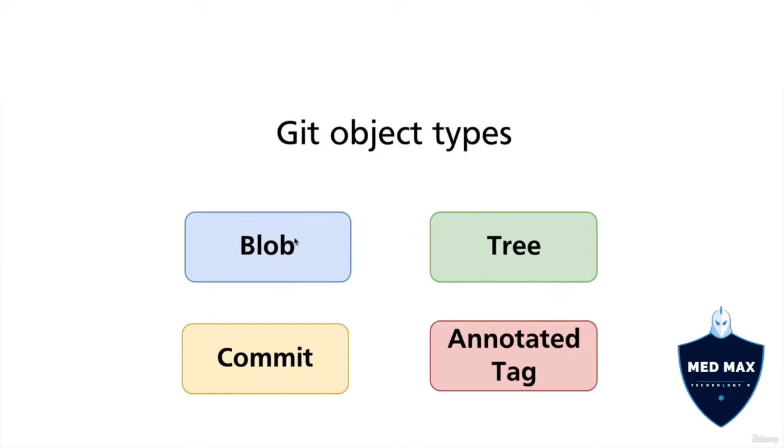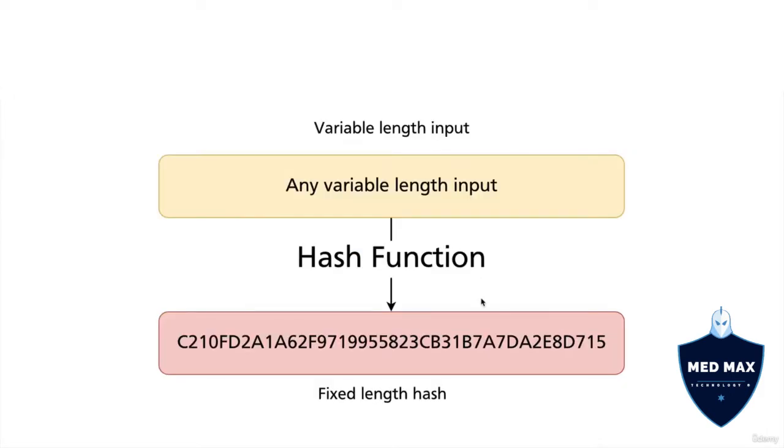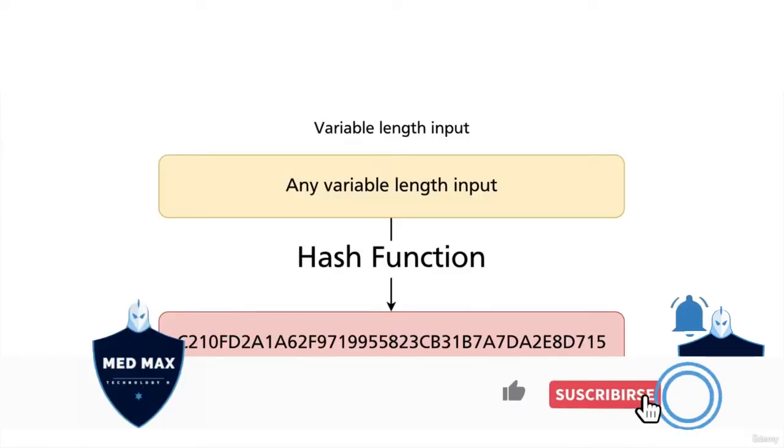Every object in git like blob, tree, commit or annotated tag has specific hash. Hash is actually unique identifier of every git object in the git repository.